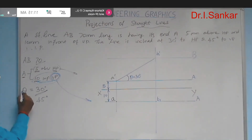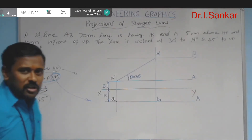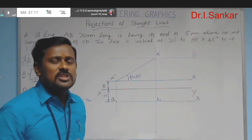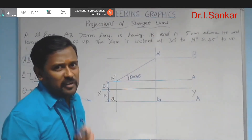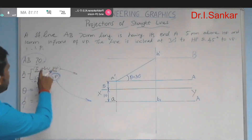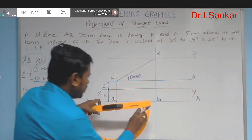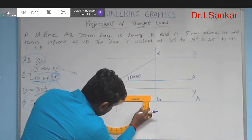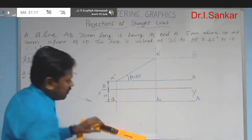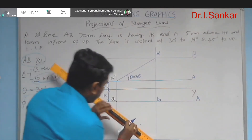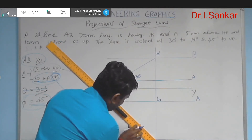Now use the true length and the true inclination with respect to VP. When a line is inclined to VP and parallel to HP, first draw the top view with phi inclination, then draw the front view. The line length is 70mm and it is inclined at 45 degrees to VP. So draw the top view line from a with 45 degree inclination to XY.